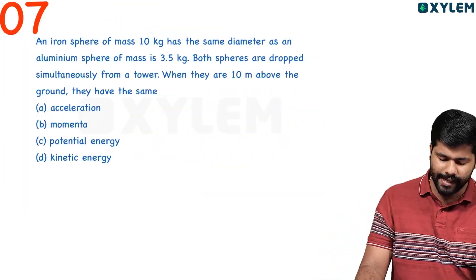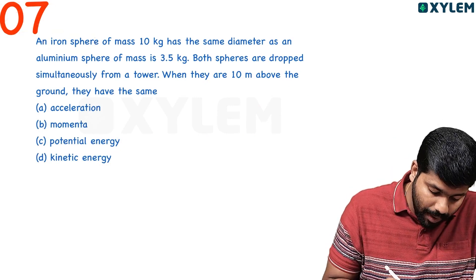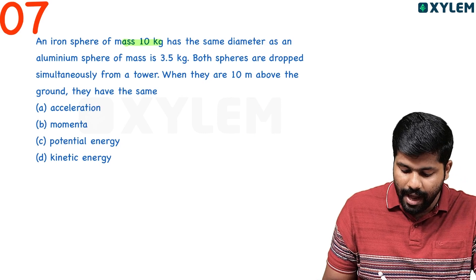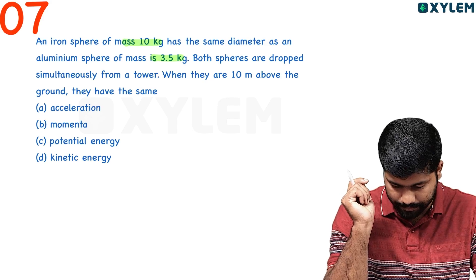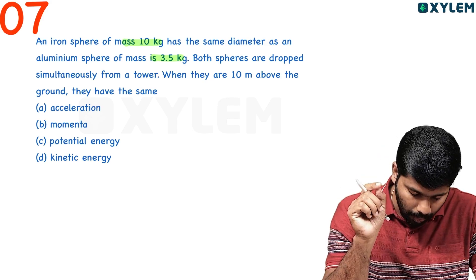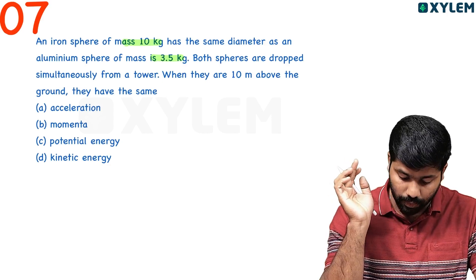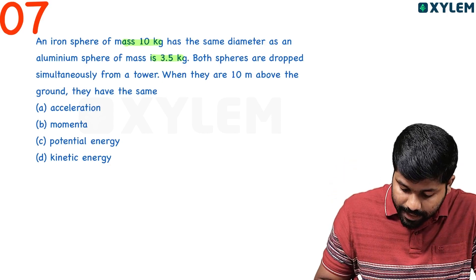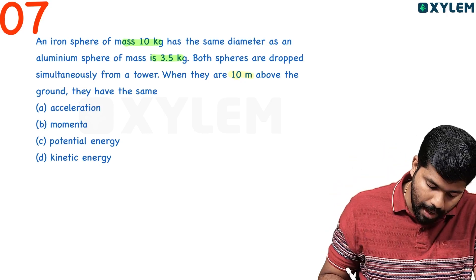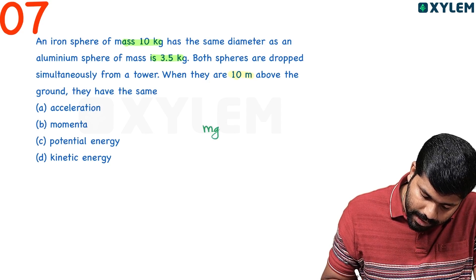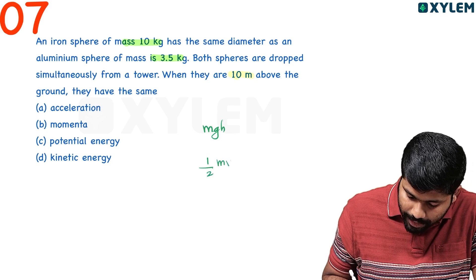Seventh question: An iron sphere of mass 10 kg has the same diameter as an aluminum sphere of mass 0.3 kg. Both spheres are dropped simultaneously from a tower. When they are 10 meters above the ground, what do they have the same? Potential energy equation: mgh. Kinetic energy equation: half mv squared.